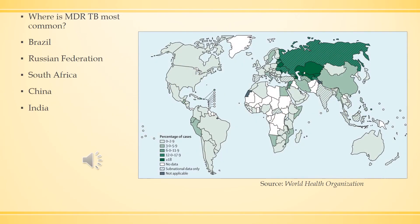You might be wondering where in the world multidrug-resistant tuberculosis is most common. It is a global disease, but the countries most affected are the Russian Federation, South Africa, and India. China and Brazil closely follow. According to the World Health Organization, about 3.7% of new tuberculosis patients in the world have a multidrug-resistant strain.